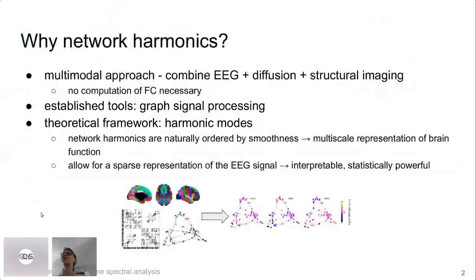So first of all, why do we need this fancy thing, this connectome spectral analysis, aka network harmonics? First of all, it's a multimodal approach, and that's always nice when we combine EEG with diffusion and structural imaging. Especially for EEG, frankly, it's been a bit of a traumatic experience working with EEG data after having the neat appearance of fMRI for several years. And it's very nice that for this method we don't have to compute functional connectivity in EEG, which is always a bit of a problem.